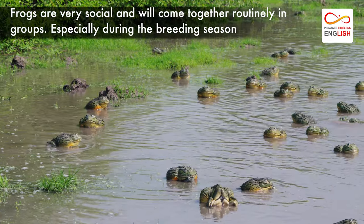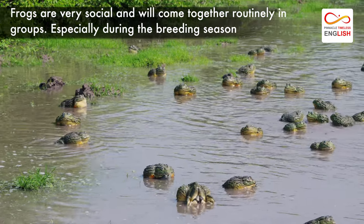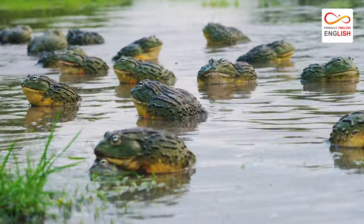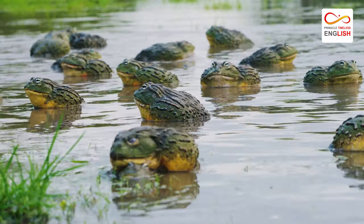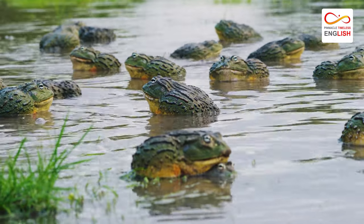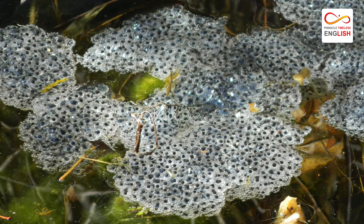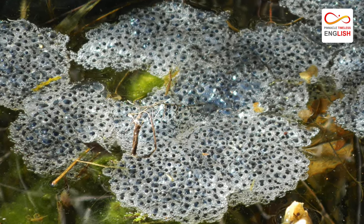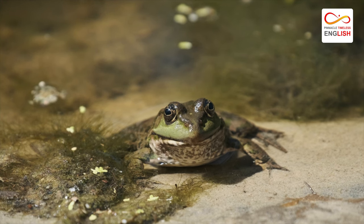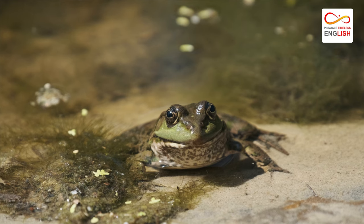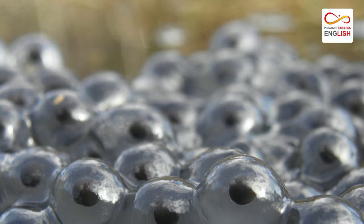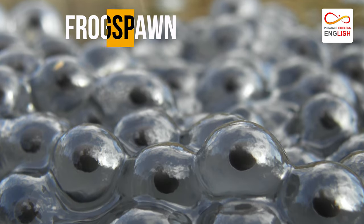Frogs are very social and will come together routinely in groups, especially during the breeding season. Frogs are born into the world in groups and spend most of their development with other frogs. Some species lay huge amounts of eggs at one time — some have been known to lay as many as 30,000 at once. These collective groups of eggs are known as frog spawn.